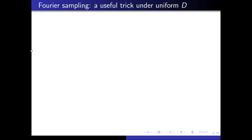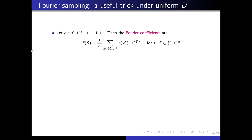Let's talk about Fourier sampling. First, let me define the Fourier decomposition. C is a Boolean function mapping n bits to minus 1 or 1. The Fourier coefficients are given by the inner product between C and the parity function — the normalized inner product. For every S in {0,1}^n, I can define the Fourier coefficients this way. By Parseval's identity, the sum of squares of all Fourier coefficients equals the expectation of C(x)^2, which is 1 since C maps to {-1,1}. So the squared Fourier coefficients C-hat(S)^2 form a probability distribution.